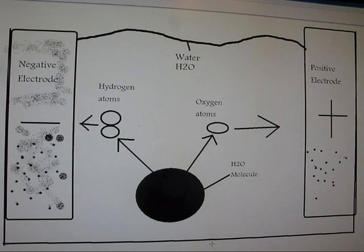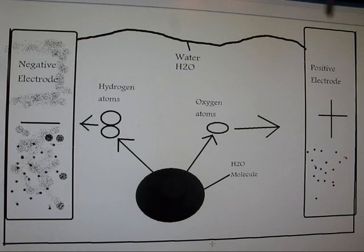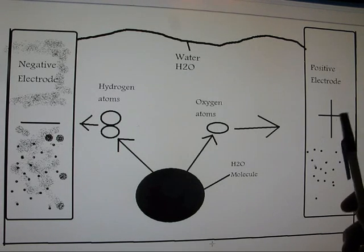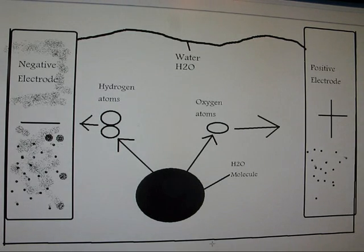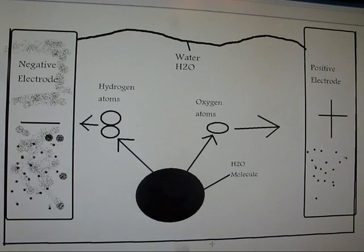So, basically what happens is, the ions then float around in the water freely, and then when voltage is applied to the two poles, the positive electrode and the negative electrode, then the negatively charged oxygen ions are attracted to the positive electrodes, and the positively charged hydrogen atoms are attracted to the negative electrode.